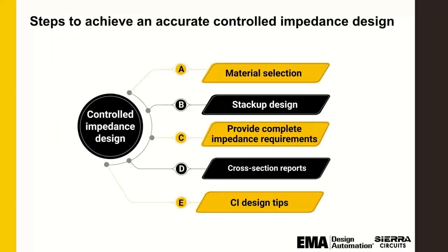Controlled impedance starts always with material selection, so we're going to cover that. We'll cover a bit of stack-up design, which is very important. Then how to provide complete information to the fabricator, also very important. And lastly, cross-section reports — knowing that what you've specified in your drawings was actually met in manufacturing. Then I'll hand it over to Matthew to talk on the practical side in the design tools.